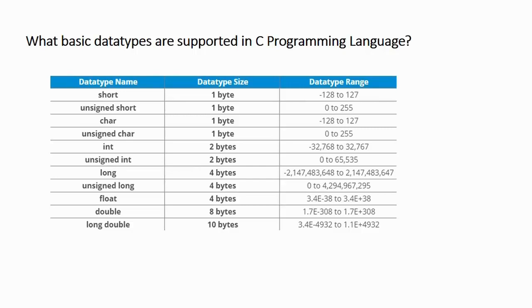In the same way, we have unsigned long, which is the unsigned version of long having the same size of 4 bytes, and its range is from 0 to 4294967295. The next data type is float, which is used to store decimal values. Its size is 4 bytes and its range is from 3.4e-38 to 3.4e+38.